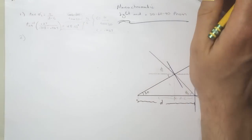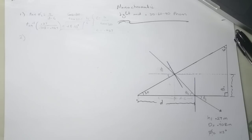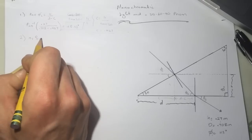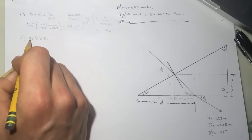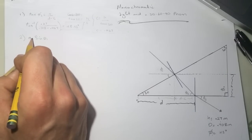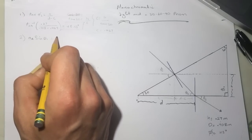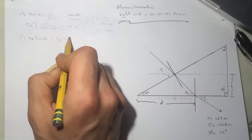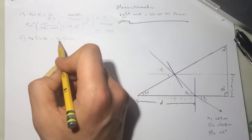Question number two is asking: what is n, the index of refraction of the prism for red light? We use Snell's law: n1 times sine(theta1) equals n_glass times sine(theta2). I'll call the index for air n_a and the index for glass n_g.